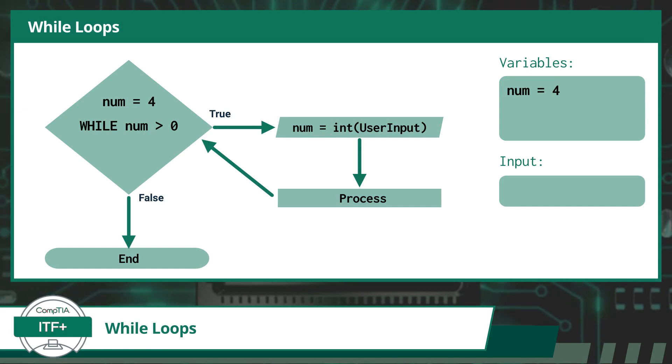A while loop is a programming construct that repeatedly executes a block of code as long as a specified condition remains true. The loop continues to run until the condition evaluates to false, at which point the program moves on to the next section of code outside the loop. A while loop is best used in situations where you don't know beforehand how many times the code needs to be executed, and you want the loop to continue until a certain condition is no longer met.